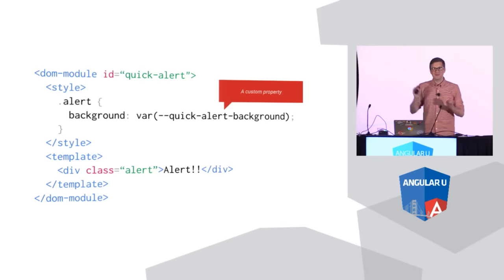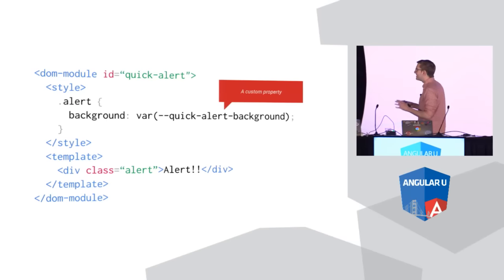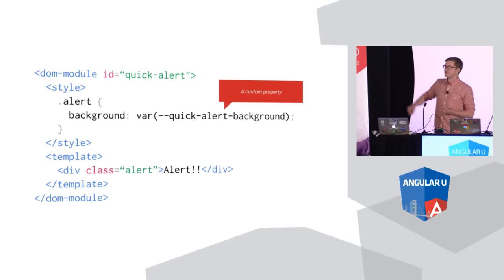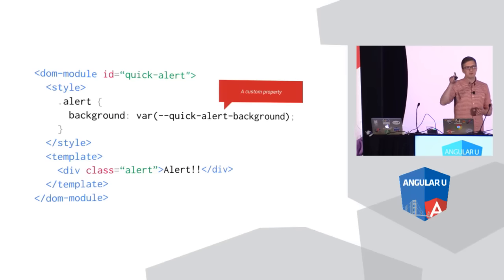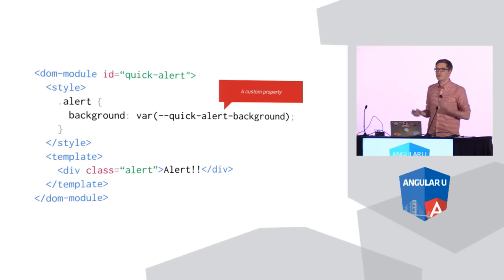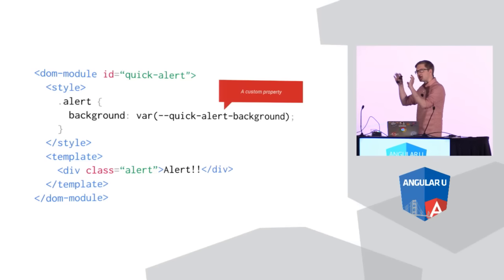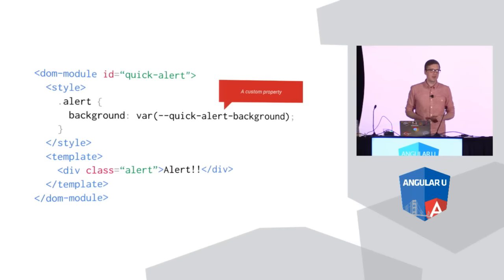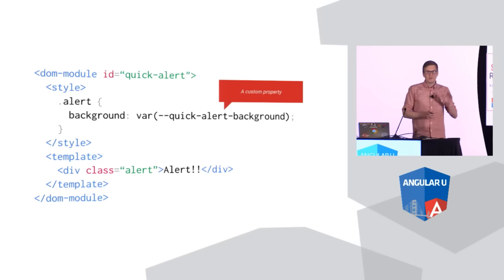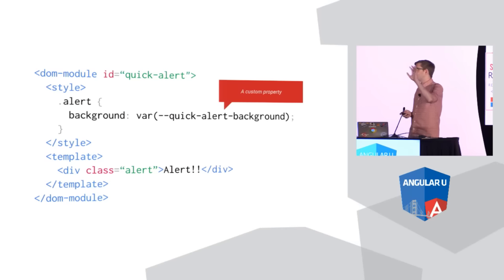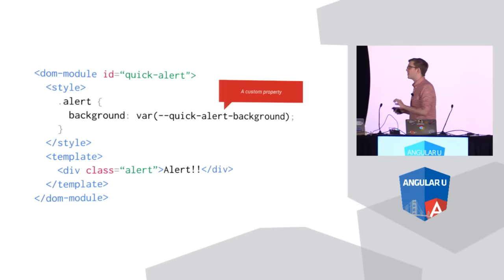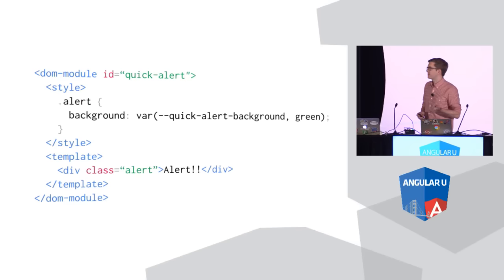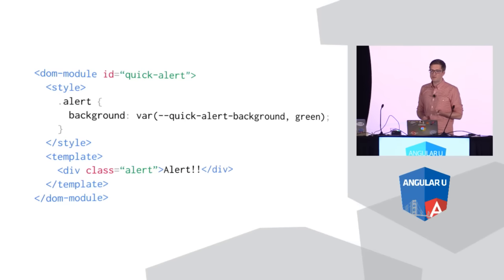The main point I really want to stress here is that this is native CSS variables in the browser — this is standards track. The actual custom property is that little bit of text with the two dashes. When I say --quick-alert-background, I'm basically exposing a hook to the outside world to pass in a style. The var() syntax is how I actually extract the value out of the custom property and use it. With this one thing, I've exposed the outside world a way to pass in a style without them actually knowing about the internals of my component, and I can still have a default value.